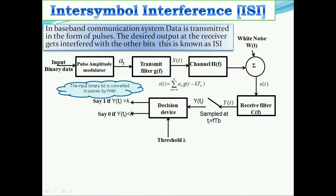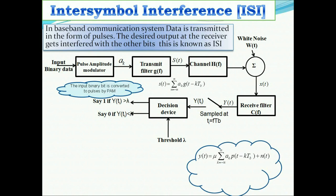Y(t) is sampled at time ti = i·Tb, giving Y(ti). These samples are used to reconstruct the original data via a decision device: if Y(ti) > threshold, output is binary 1; otherwise binary 0. Y(t) = μ · summation k = −∞ to ∞ of AK · P(t − KTb) + N(t), where N(t) is channel noise, μ is a scaling factor for magnitude error, and P(t − KTb) accounts for pulse shape changes. μ·P(t) = G(f)·H(f)·C(f).